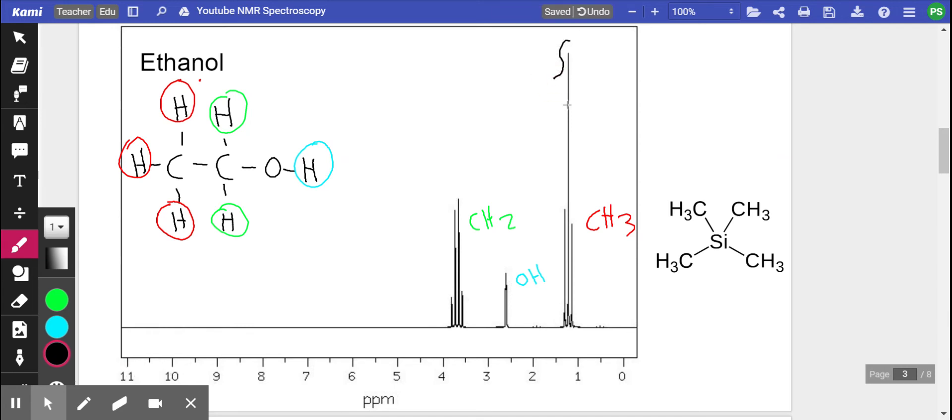And if you do the integration, the machine will tell you there's three hydrogens in this particular environment, whereas here there is only one, and here there's two. And that will give us a lot of useful information about what the structure is, are there any branches, what functional groups are there.